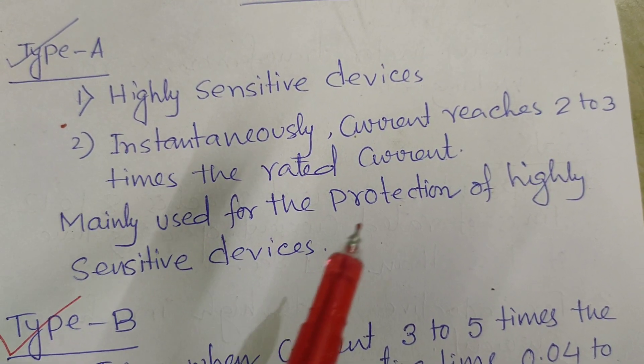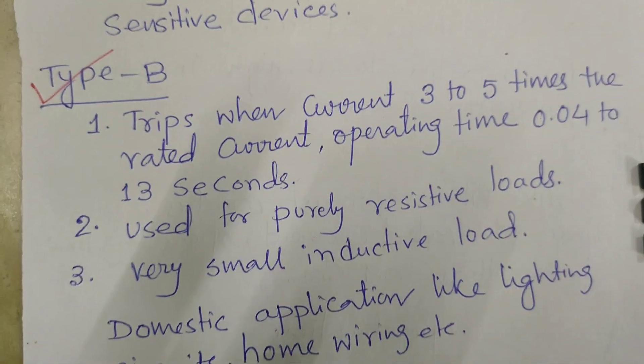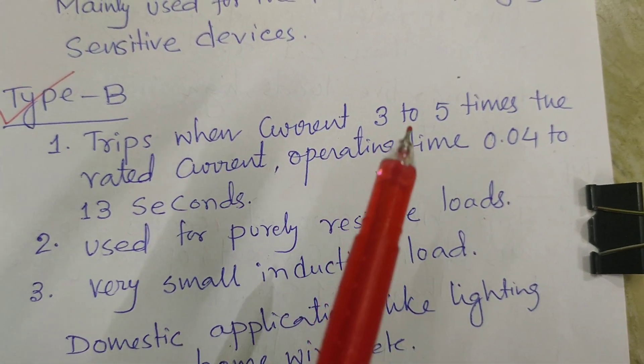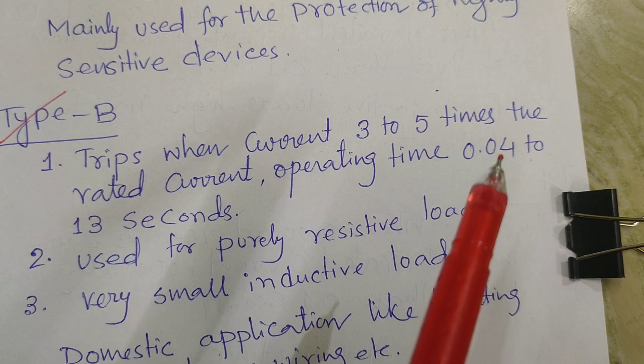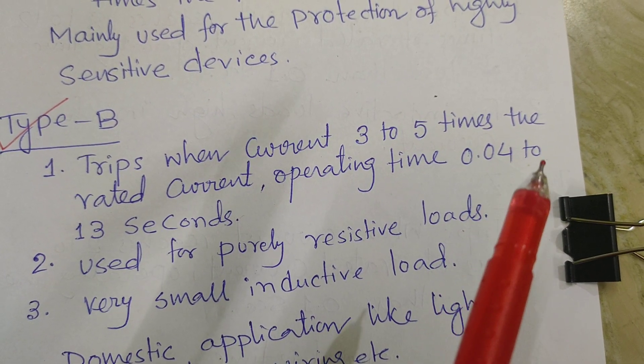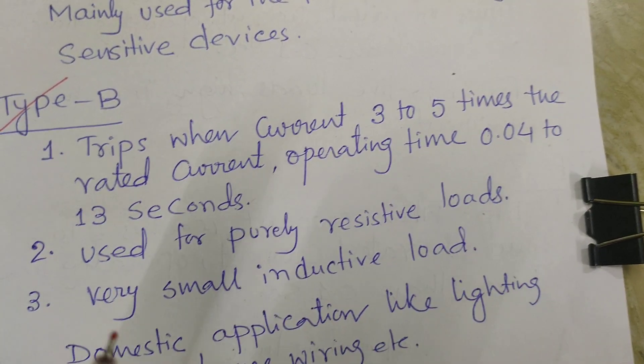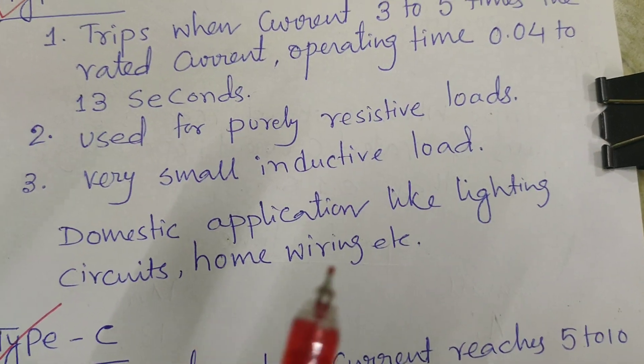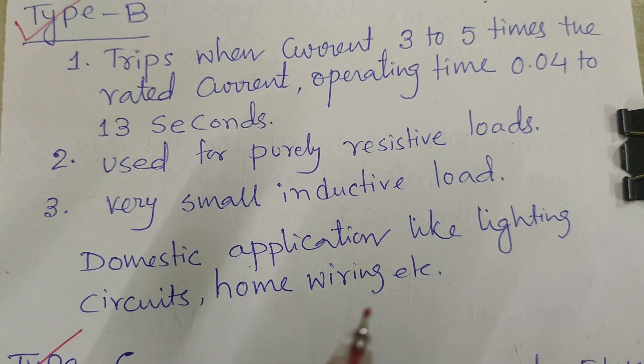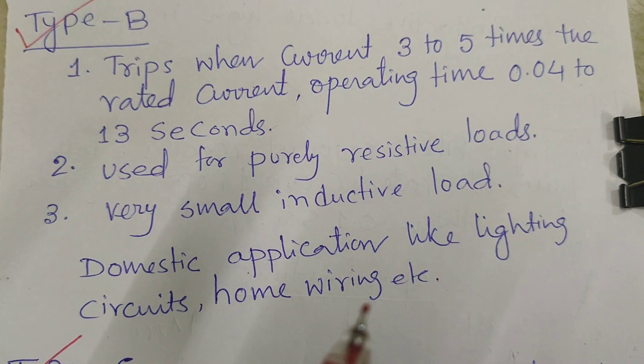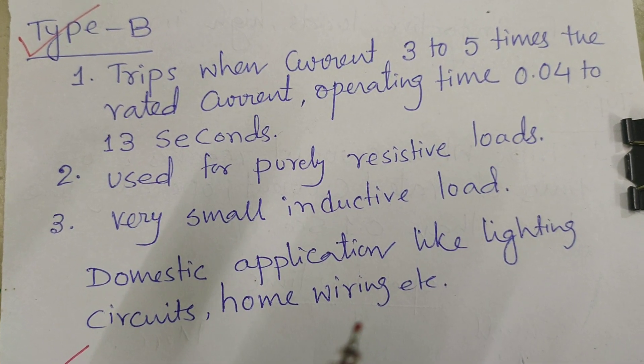B-type trips when current reaches 3 to 5 times the rated current. Operating time 0.04 to 13 seconds. Used for purely resistive loads, very small inductive loads, domestic appliances like lightning circuit, home wiring, etc. We are using the B-type MCBs. And in the starting of the video, I showed you the B-type MCB. So, B-type MCB is used for the domestic purpose.